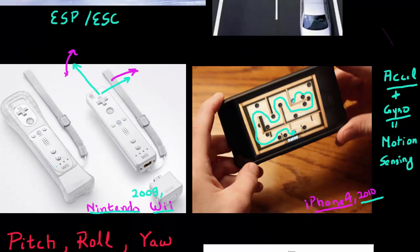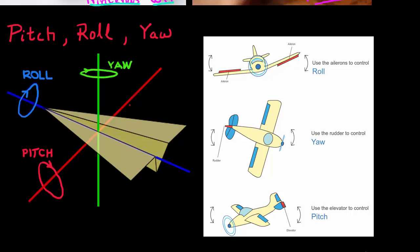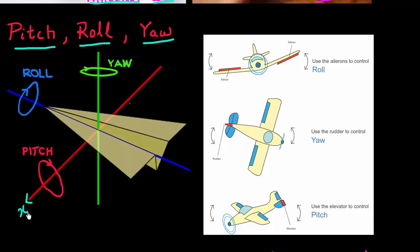Let me introduce three terms which are often used in the context of MEMS gyroscopes. These three terms are pitch, roll, and yaw. What they represent is the angular motion or angular velocity along the x, y, and z axes.